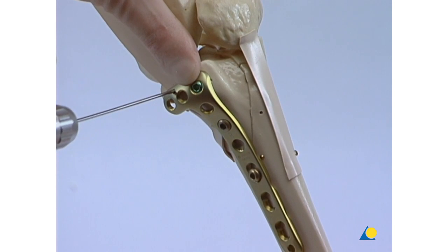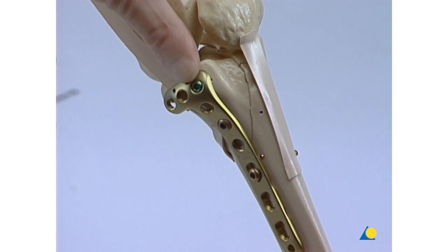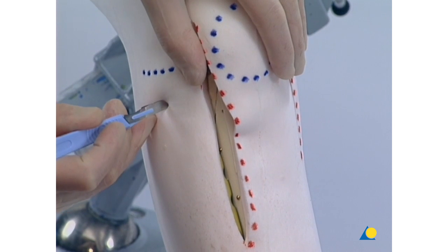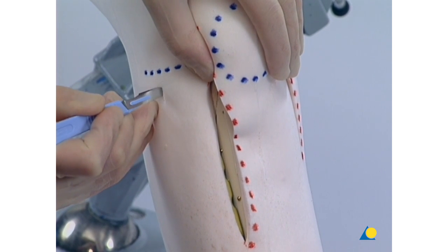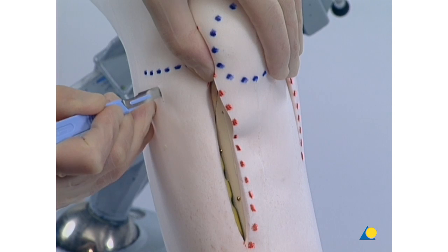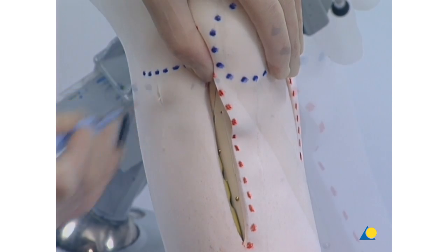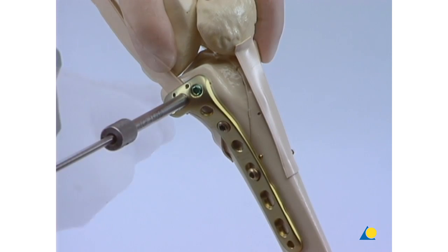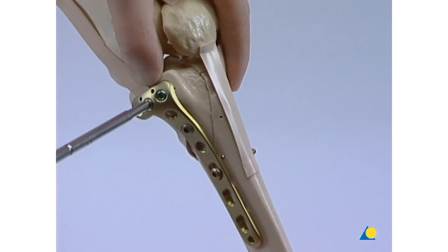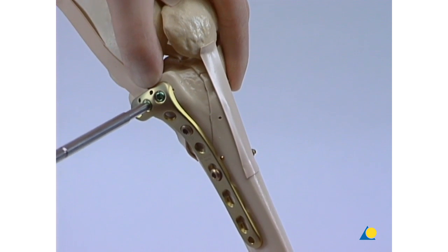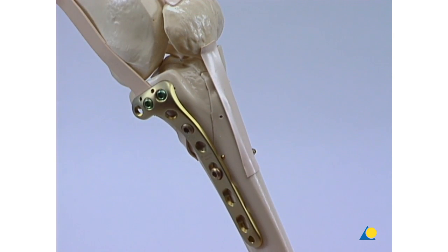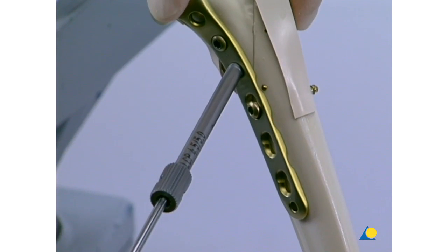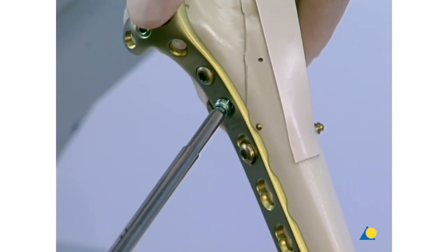The posterior K wire is removed. The more posterior plate holes in the L plate are usually hard to reach through the anterior incision. A separate stab incision is appropriate. A second locking head screw is inserted through the middle plate hole of the proximal end of the plate in a similar manner to the first one. The proximal fixation is completed by using a locking head screw just proximal to the apex of the fracture.